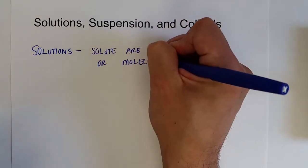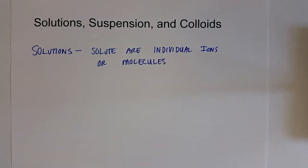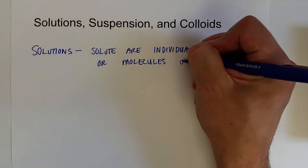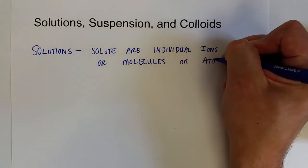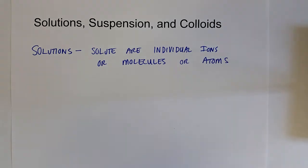And it will make sense what we're talking about in the individual state when we talk about colloids. So solutes are individual ions or molecules, not aggregates of ions or molecules. And of course they're homogeneous mixtures.